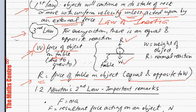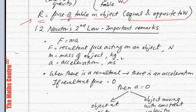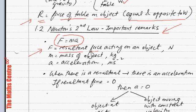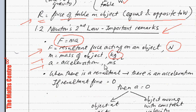Now let's look at the most important idea in this chapter, which is Newton's second law. The main formula we are going to use is F equals MA. F is the resultant force — the emphasis is on the word resultant — acting on an object, measured in Newtons. M is the mass of the object, measured in kilograms. And A is the acceleration, measured in meters per second squared.